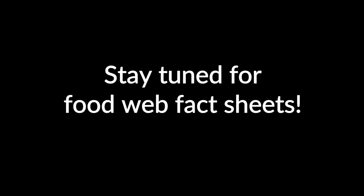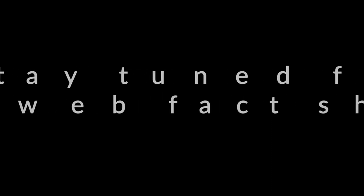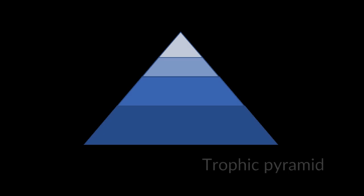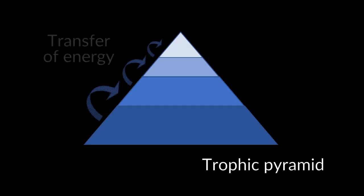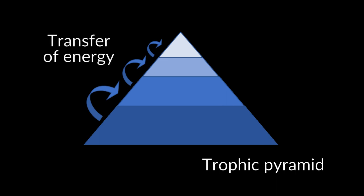A food web can be shown in different ways. Later, I will show several neat fact sheets depicting the specific food webs of each of the Great Lakes as well as Lake St. Clair. But to first get more background information, let's build a model and talk about key terminology from the food web world. This model is going to represent what is known as a trophic pyramid, which shows the transfer of food — or in other words, energy — through an ecosystem.